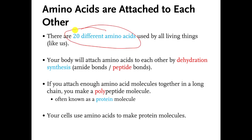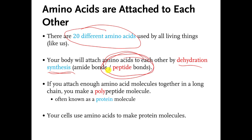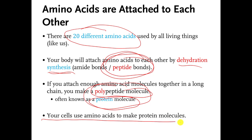There are 20 universal amino acids — that means there are 20 amino acid molecules found in all living organisms. Amino acid molecules are connected to each other by a special type of dehydration synthesis reaction. The bond that gets made when you connect amino acids to each other is called a peptide bond. If you attach enough amino acids to each other, the molecule you make is called a polypeptide, also known as a protein molecule.